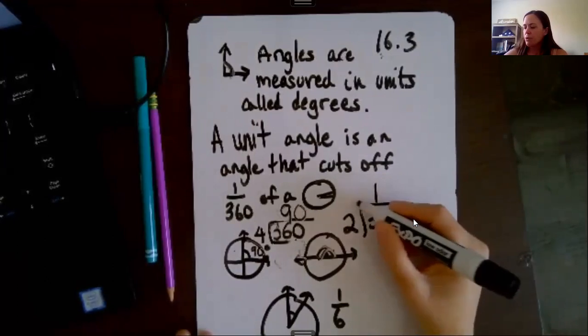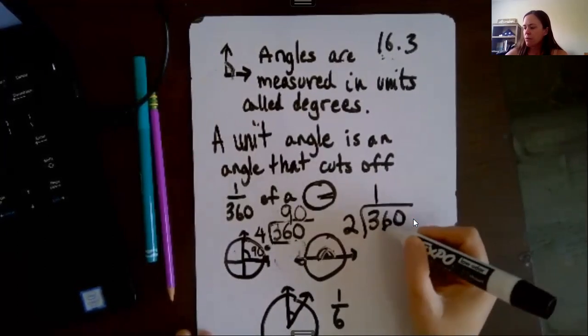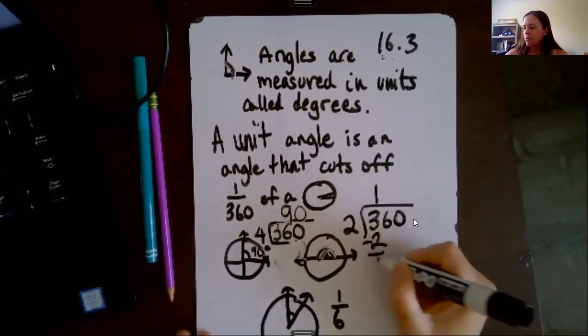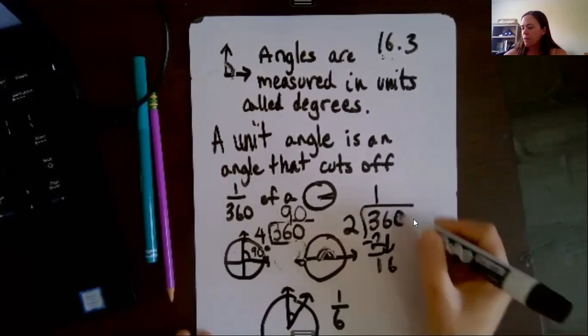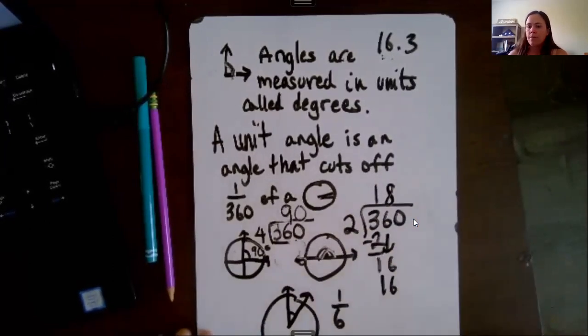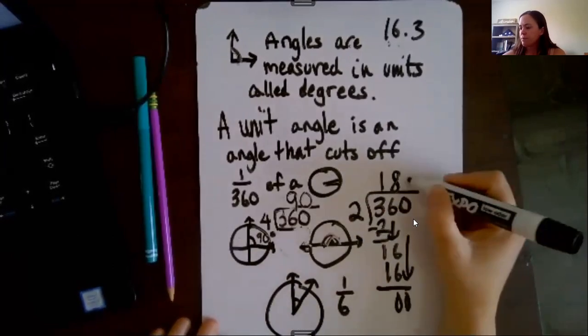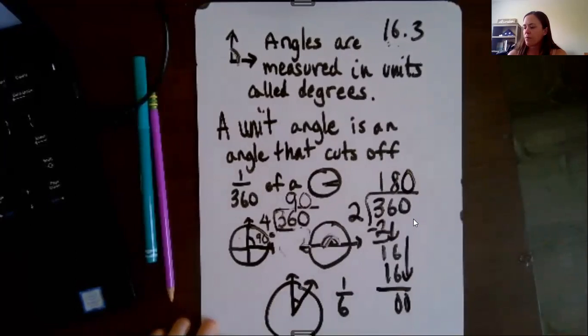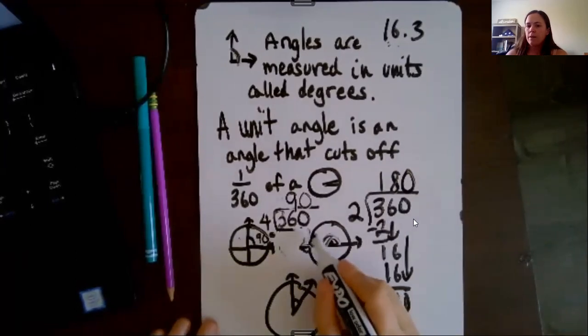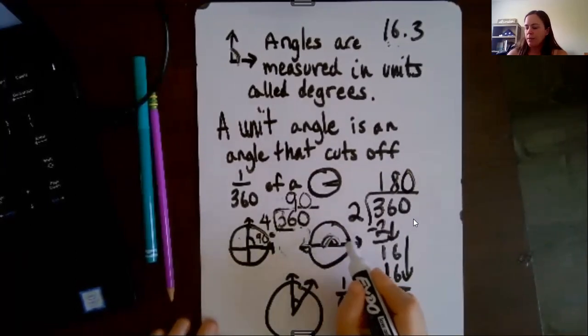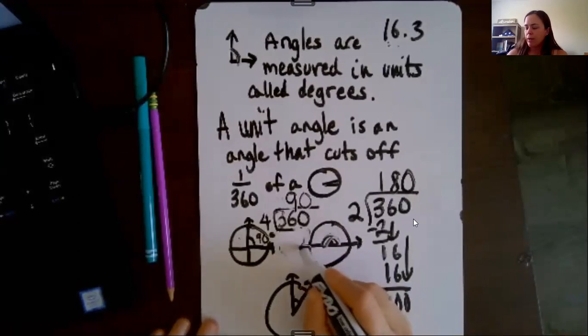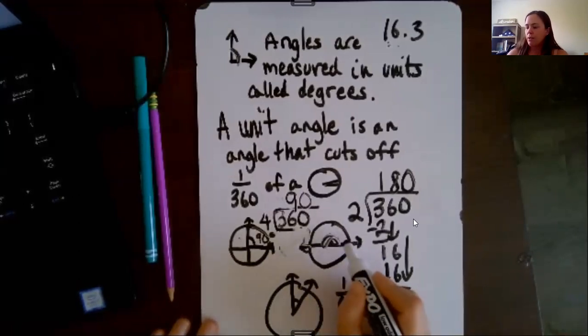If you don't know, we'll just use division. So 360, I'm talking about this straight line, is 180 degrees.